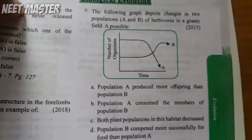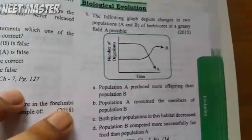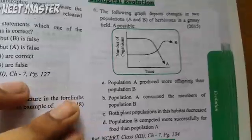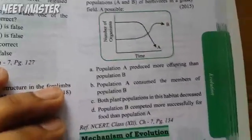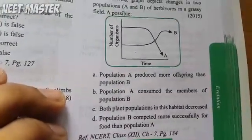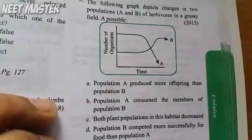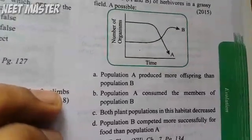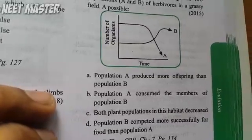The following graph depicts changes in two populations A and B of herbivores in a grassy field. Options: Population A produced more offspring than population B; Population A consumed the members of population B; both plant populations in the habitat decreased; Population B competed more successfully for food than population A.